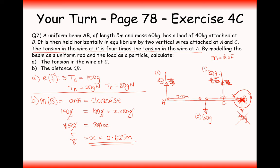So the distance from C to B is 0.625 metres. That's how we answer that question. Have a go at plenty of questions from exercise 4C — these are uniform rod questions where you use the two strategies: upwards forces equals downwards forces, and clockwise moments equal anticlockwise moments from any pivot point you choose. Thanks very much for watching.